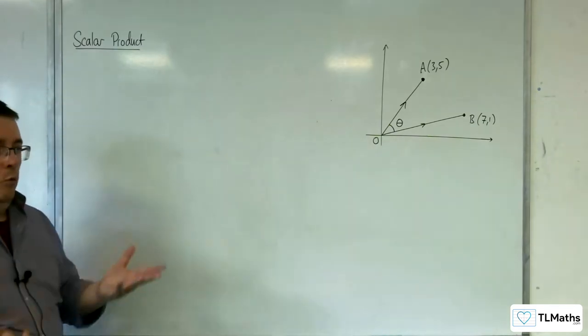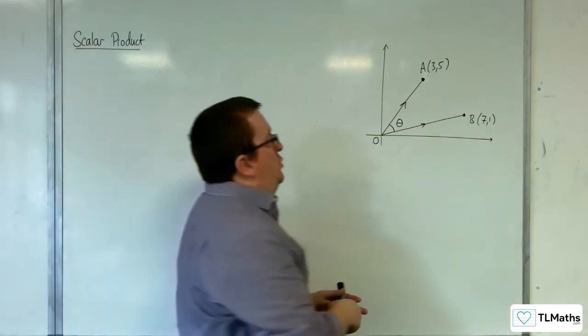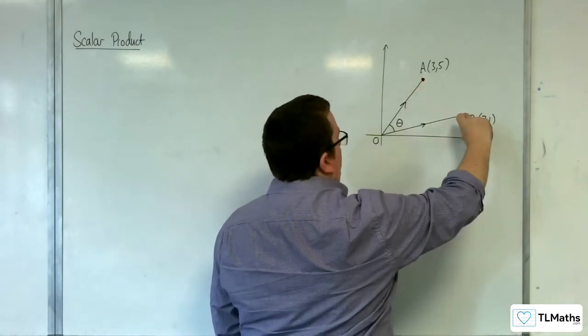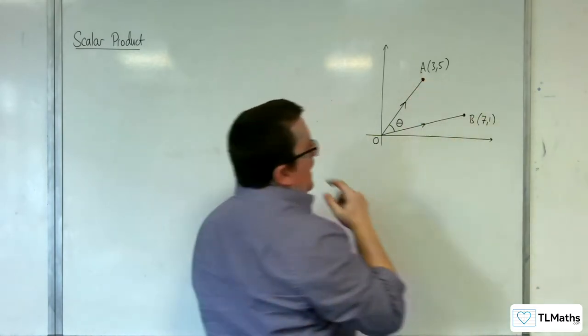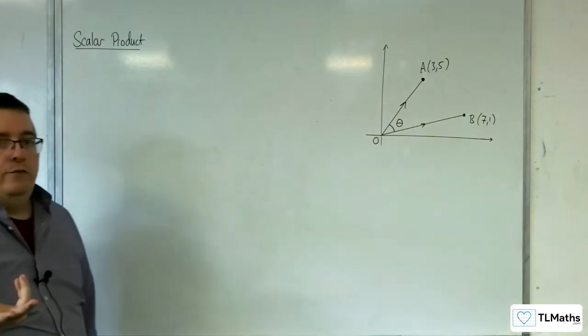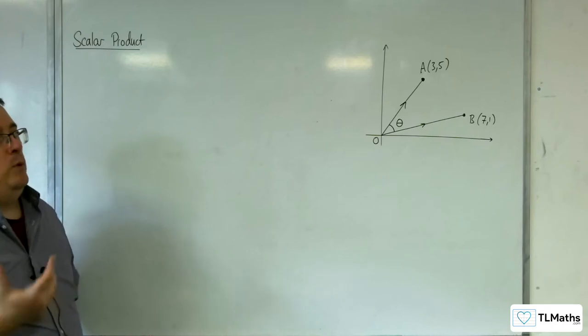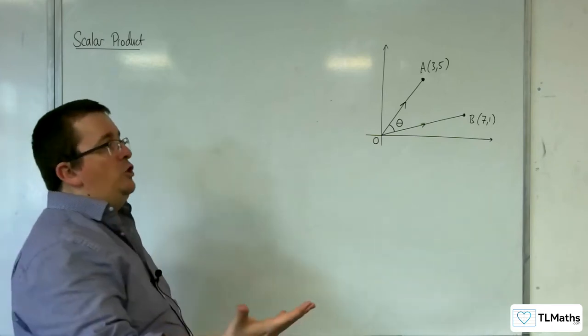Now, one way of doing this would be just to find the angle using that right angle triangle and take away the angle using that right angle triangle, which is fair enough. I want to be thinking about this more in general, so we want to be able to extend this up to three dimensions.